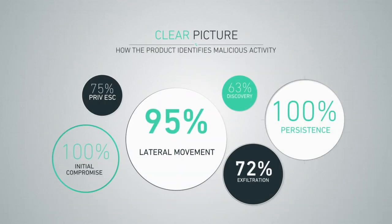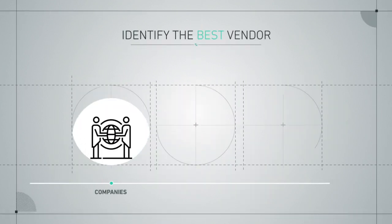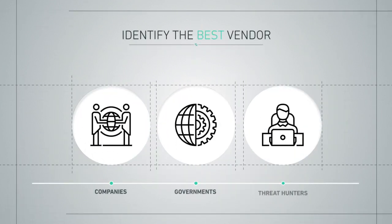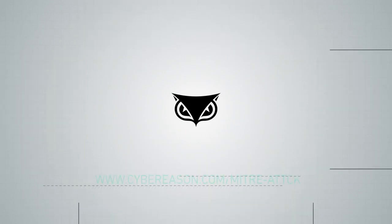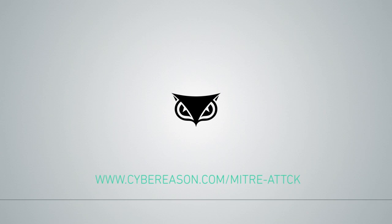These detection types and modifiers come together to give a clear picture of how effectively the product identifies malicious activity. It offers unbiased, raw data for interpretation by companies, government organizations, and threat hunters looking to identify the best vendor for their needs. To learn more about MITRE ATT&CK, head to our website, cybereason.com/MITRE-ATT&CK.